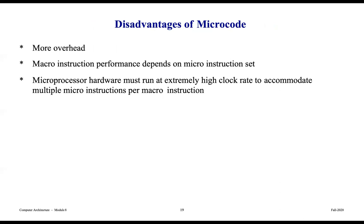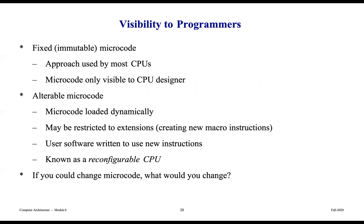Why use microcode instead of circuits? It's a higher level of abstraction with more flexibility. It's easier to build and less error-prone than building with logic gates, and it's easier to change — in a few clock cycles you can go from one mode to another. You can easily upgrade to the next version of a chip and avoid field upgrades. The disadvantages include more overhead: macro instruction performance depends on the micro instruction set, and the microprocessor hardware must run at extremely high clock rates to accommodate multiple micro instructions per macro instruction.